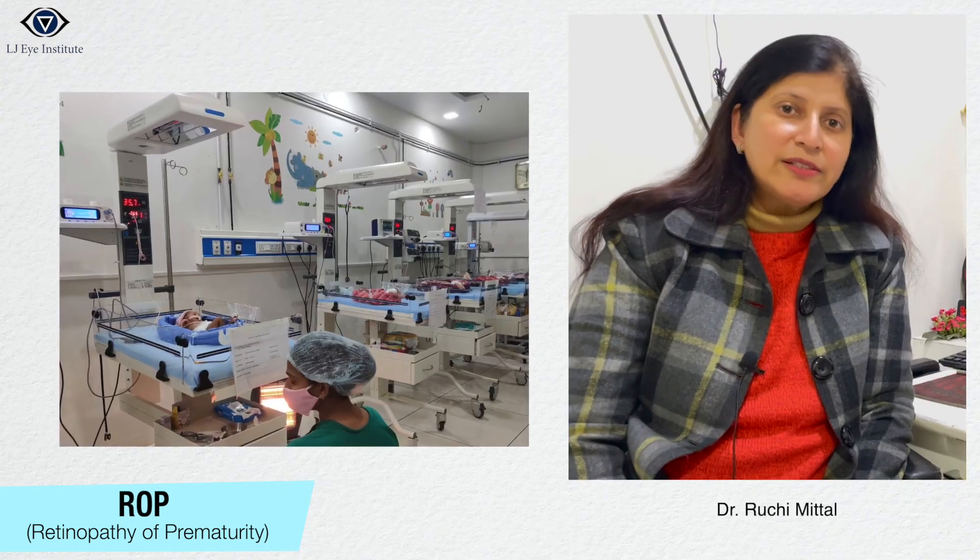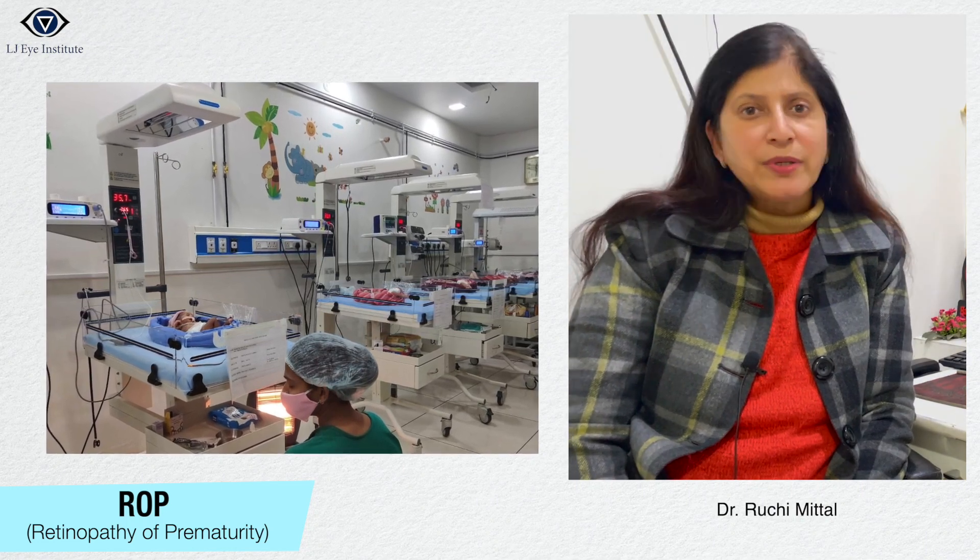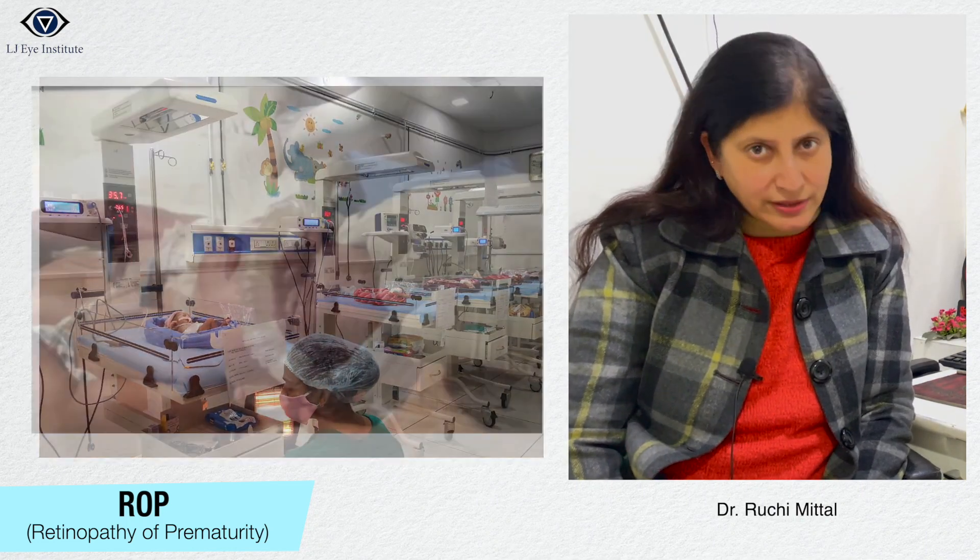These infants need to be screened for ROP. The parents of the child should be well informed about the condition and the screening procedure, because the child may require multiple visits to the hospital. The neonatologist can refer the child at 28 to 30 days of birth, or if the child is admitted in NICU or nursery, screening can be done there as well.